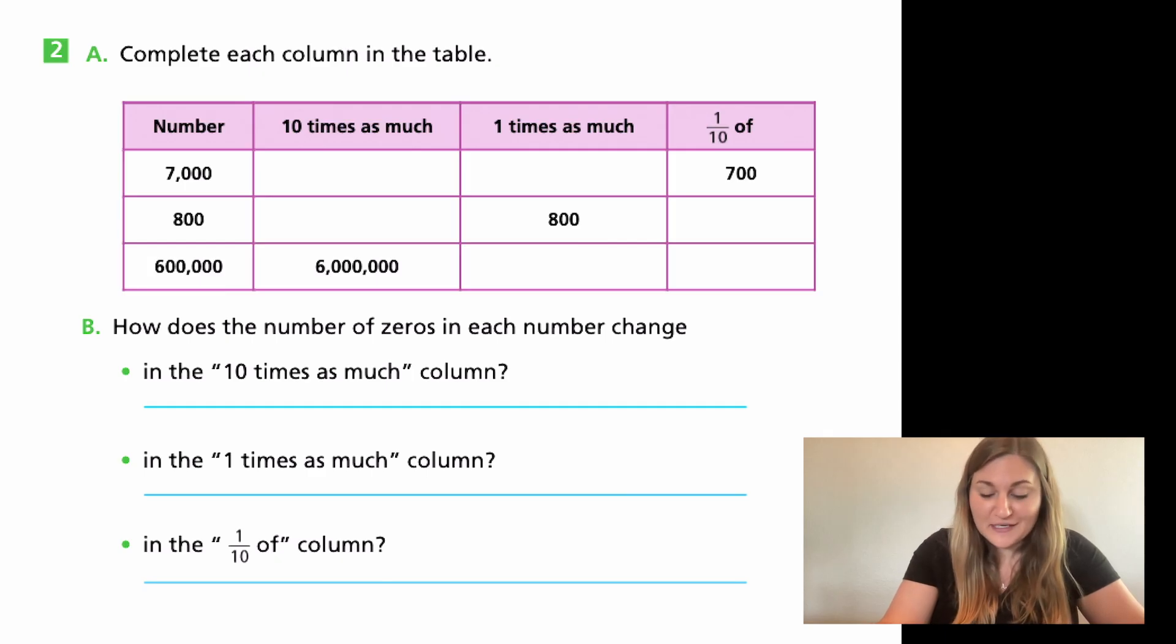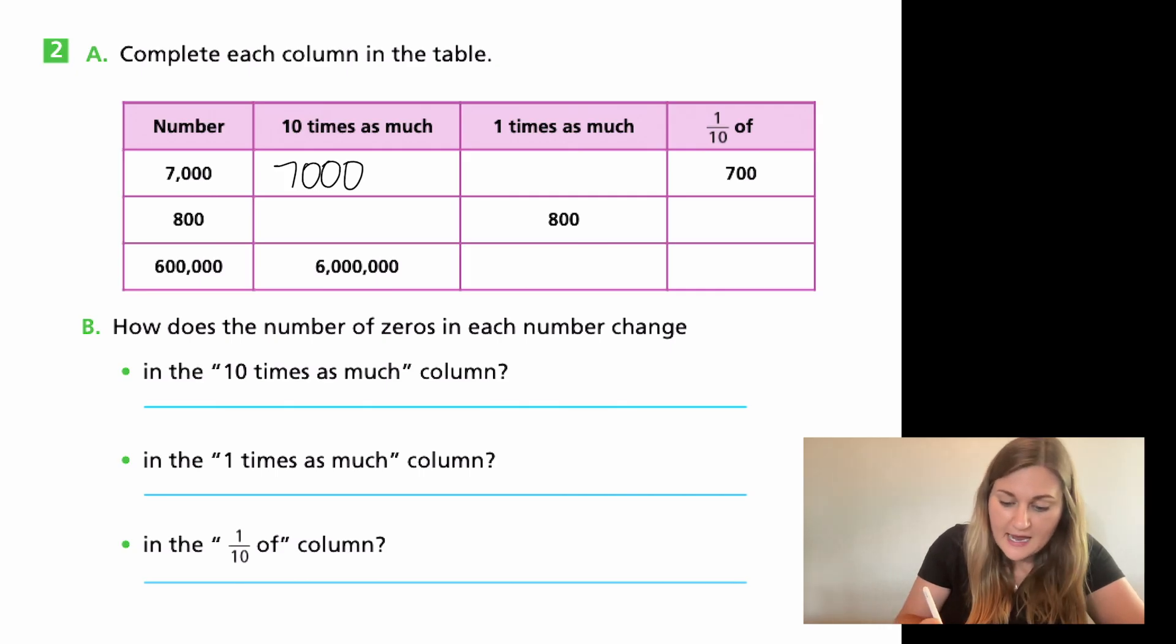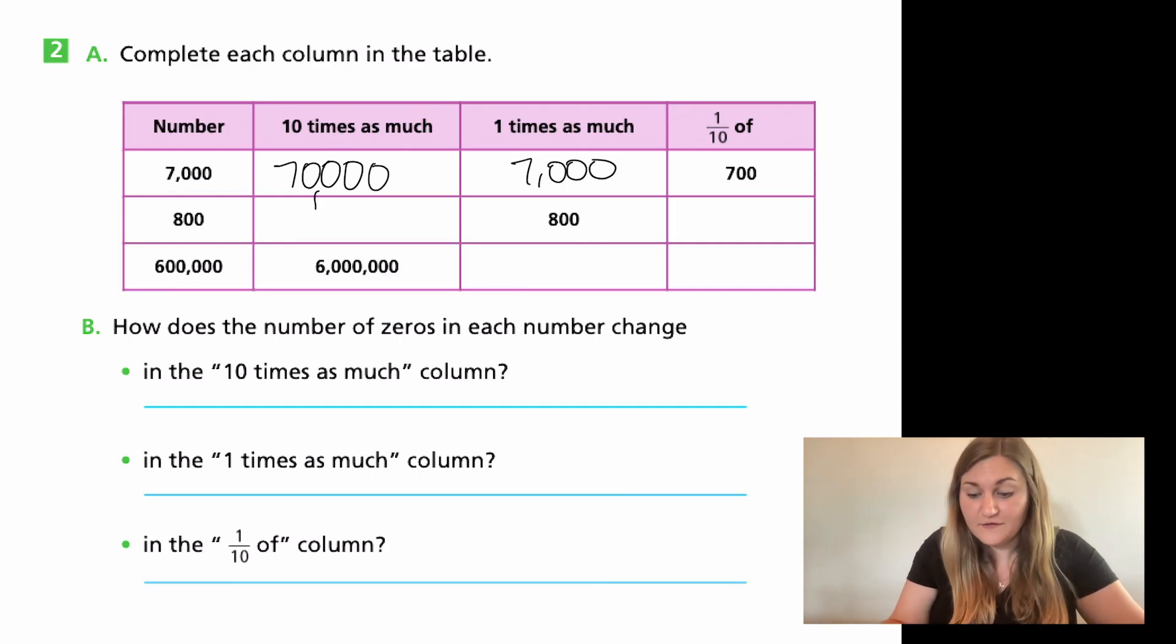Alright. Hopefully you got a chance to fill those out. I'm going to go over it with you now. If I have 7,000 and I want ten times as much as that, hopefully last year in fourth grade, you learned a trick. If you multiply it by ten, just add a zero. So what I'm going to do is I'm going to write my number 7,000, but I'm going to add one more zero, making my number now 70,000. It moved over to the left in my place value and now my number is larger. And I know if I multiply something by one, my number doesn't change. So that middle column is going to be the same number they gave us. It's going to be 7,000. And for the first row, they already gave us the answer one tenth. All I'm going to do is I'm going to cross out that zero. I'm taking a zero away. I'm dividing by ten. I'm taking one tenth of, which means take away a zero.